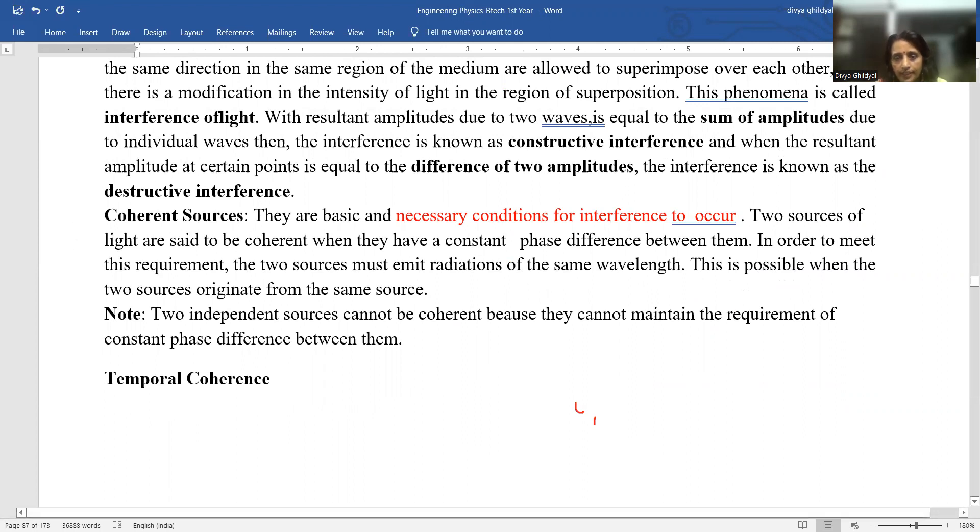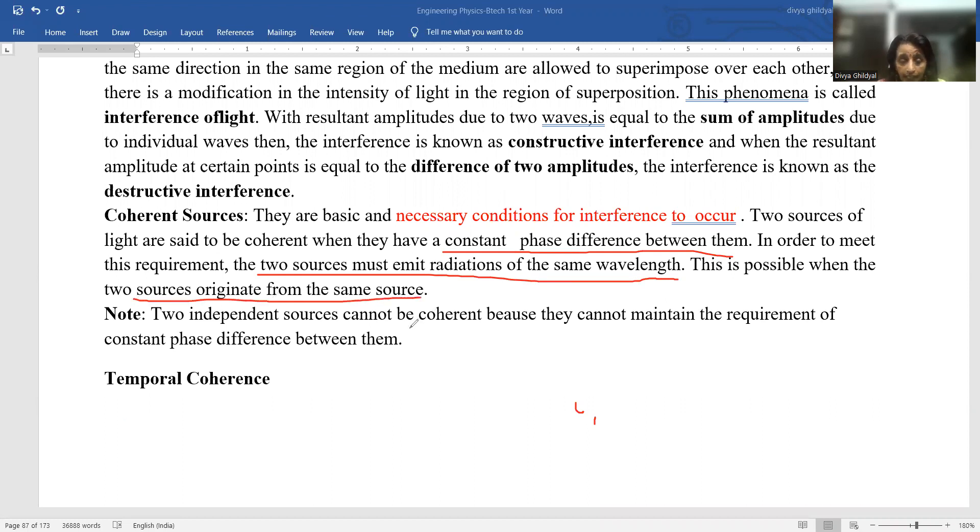And when resultant amplitude due to two waves is equal to the sum of amplitudes due to individual waves, then interference is known as constructive interference. And when resultant of amplitude is due to difference of two amplitudes, then it is known as destructive interference or minima. The necessary condition for us to observe interference pattern is coherent sources, monochromatic source of light, and path difference between the interfering rays. So what are coherent sources? This question is asked in section A. Coherent sources is the basic necessary condition for interference pattern to observe. So two sources of light are set to be coherent when they have a constant phase difference between them. And in order to meet this requirement, the two sources must be emitted from the same source. And this is possible only when their origination is from the same source of light.